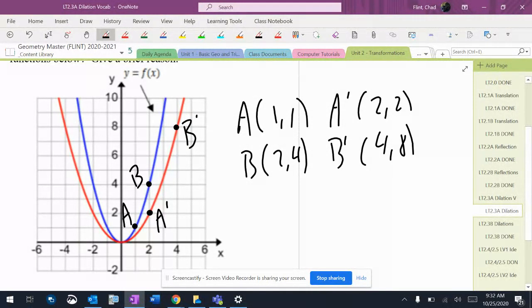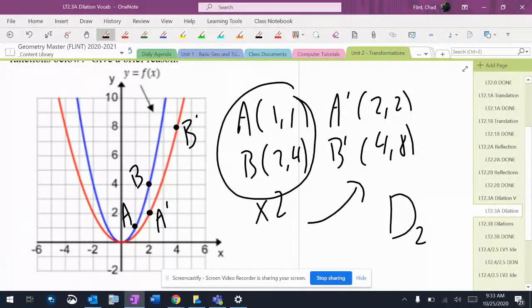Alright, so good news here. If I multiply all of these coordinates by 2, I get all of those coordinates, which means a dilation of 2 took place.